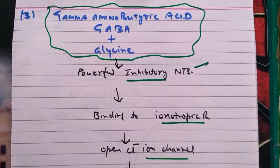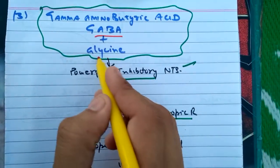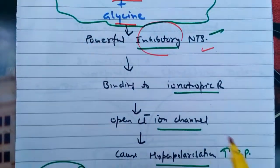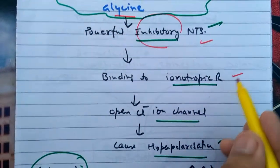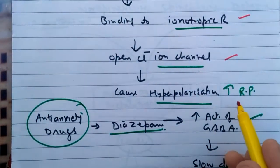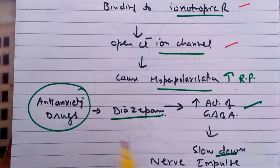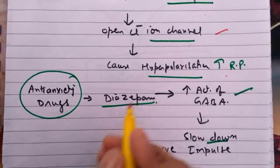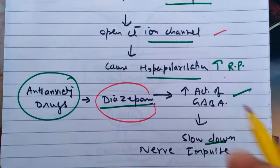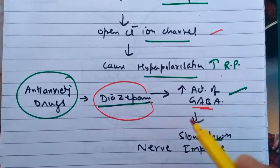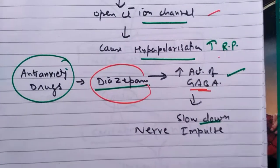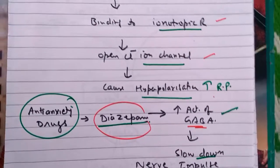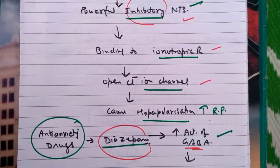GABA (gamma-aminobutyric acid) and glycine both have a neuro-inhibitory role. They are inhibitory transmitters that bind to ion receptors, open the chloride channel, and cause hyperpolarization, increasing the inhibitory potential. In stress conditions such as anxiety, the drug diazepam is used. Diazepam increases the activity of GABA, and when GABA activity increases, the nerve impulse is slowed down, thereby removing stress.